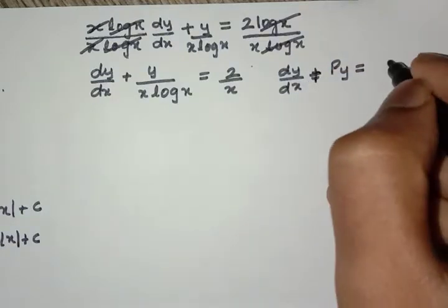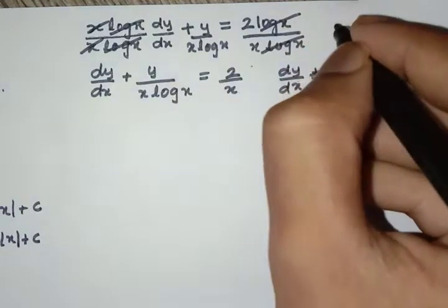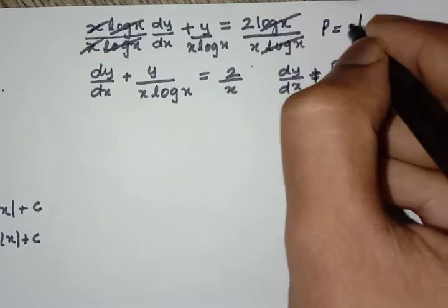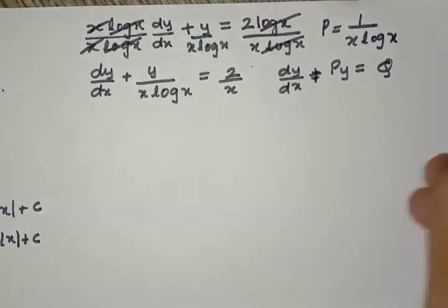Here P will be equal to 1 by x log x and Q will be equal to 2 by x.